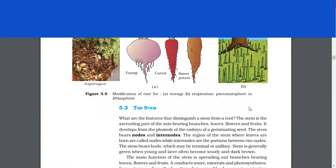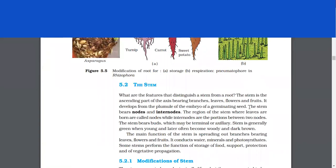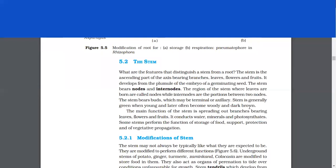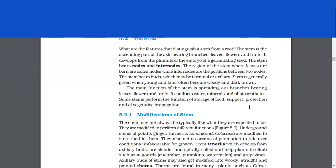The stem. What are the features that distinguish a stem from a root? The stem is the ascending part of the axis bearing branches, leaves, flowers, and fruits. It develops from the plumule of the embryo of a germinating seed. The stem bears nodes and internodes. The region of the stem where leaves are born are called nodes, while internodes are the portions between the two nodes. The stem bears buds which may be terminal or axillary. The stem is generally green when young, but later often become woody and dark brown.